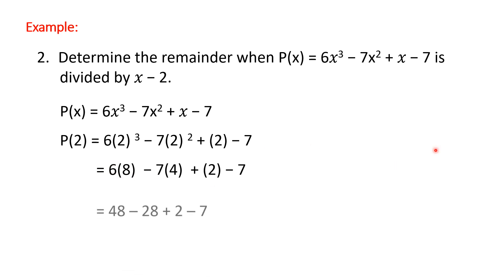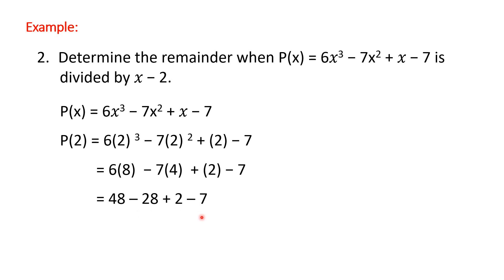Now 2³ = 8 and 2² = 4. Copy the 2 and copy the -7. Then: 6 times 8 is 48, -7 times 4 is -28, copy +2 and copy -7. So 48 - 28 = 20, plus 2 is 22, minus 7 is 15. So 15 is our remainder.